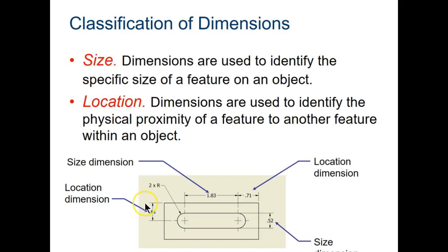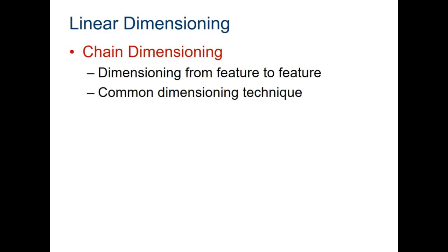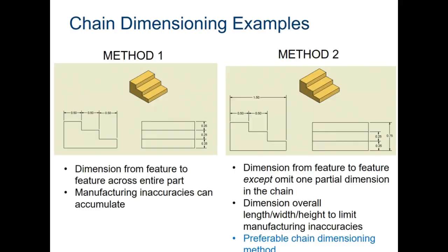We will not be using chain dimensioning, but we do need to talk about what it is. When you chain dimension, you go from feature to feature. It is commonly used in architecture. The best way to do it is method two, where you would have an overall dimension that's separate and then a chain dimension showing the width of these two features. What can happen here is if you make a mistake on one of these measurements when you're actually making the part, it propagates through the rest of the part. That's why we don't like to use it for electromechanical dimensioning.